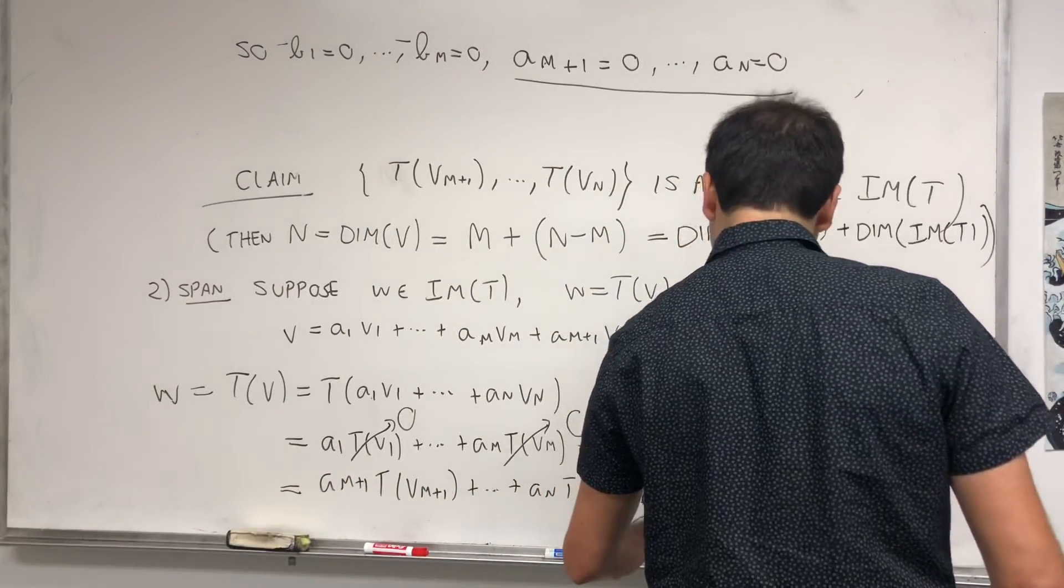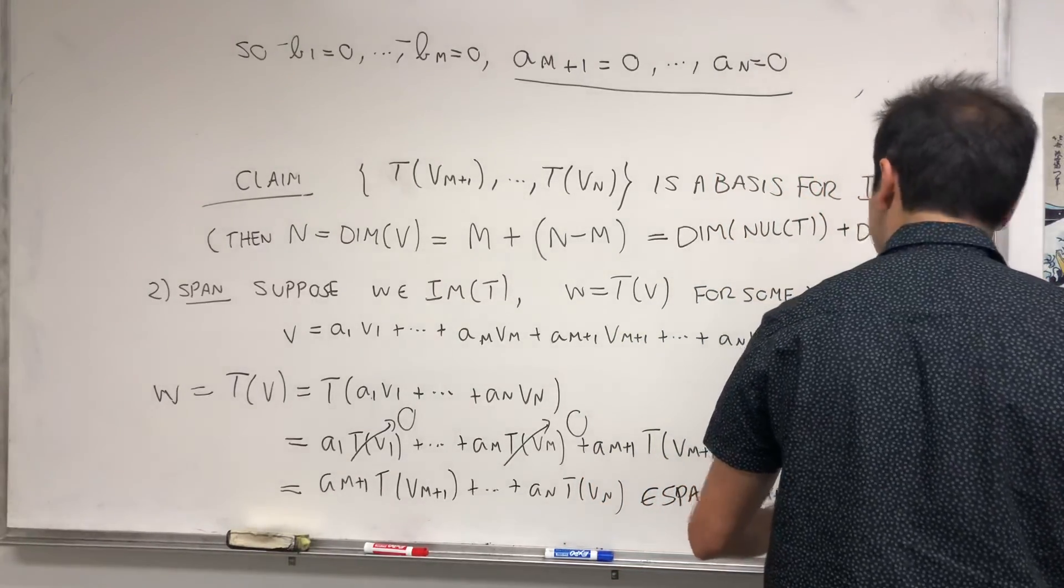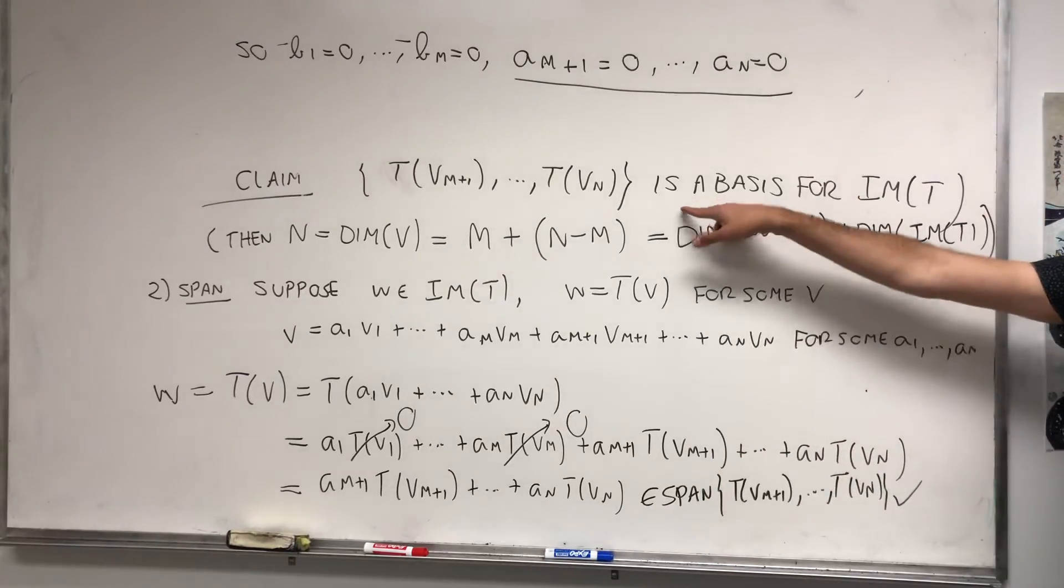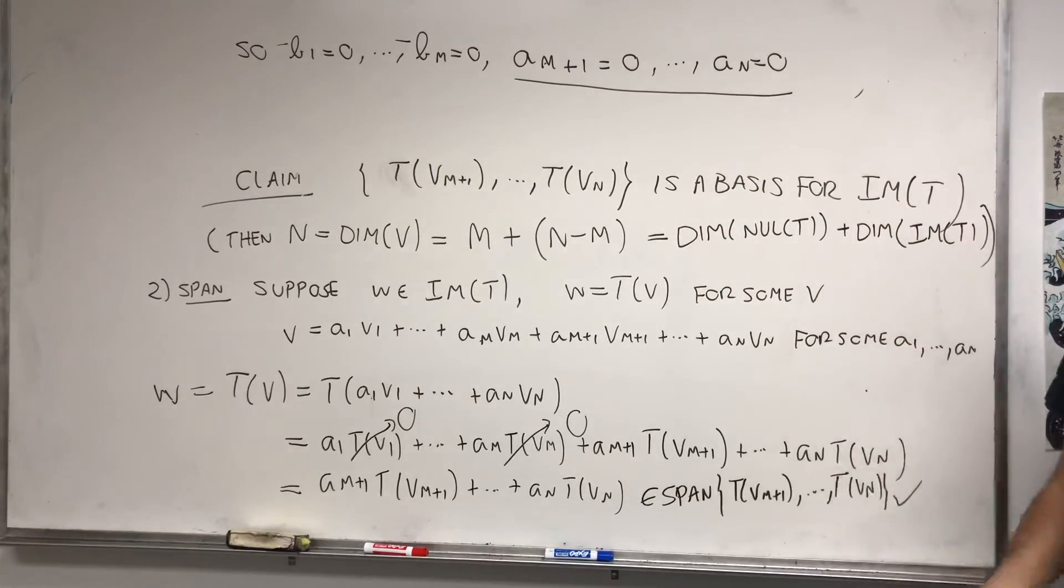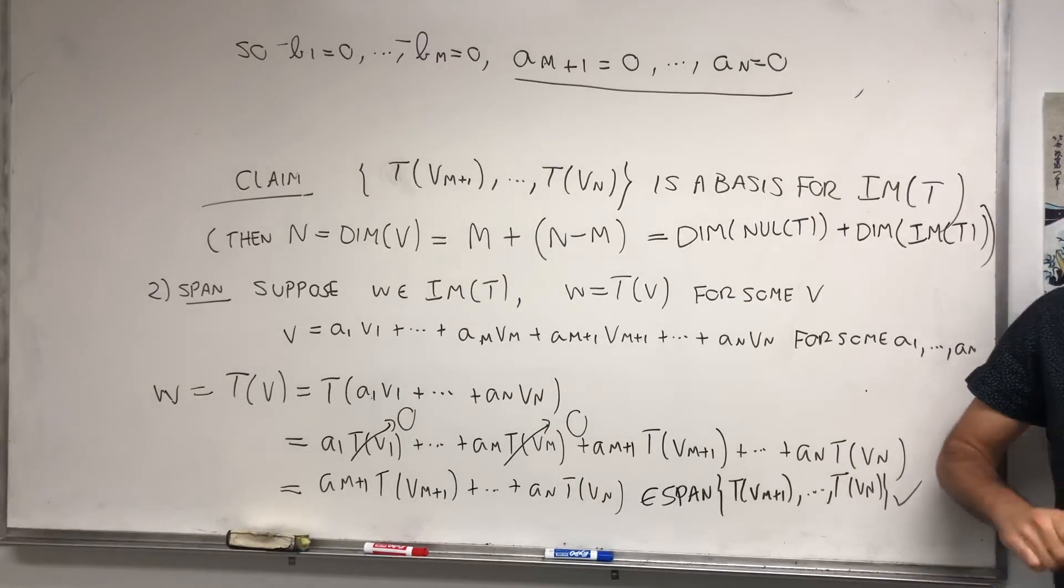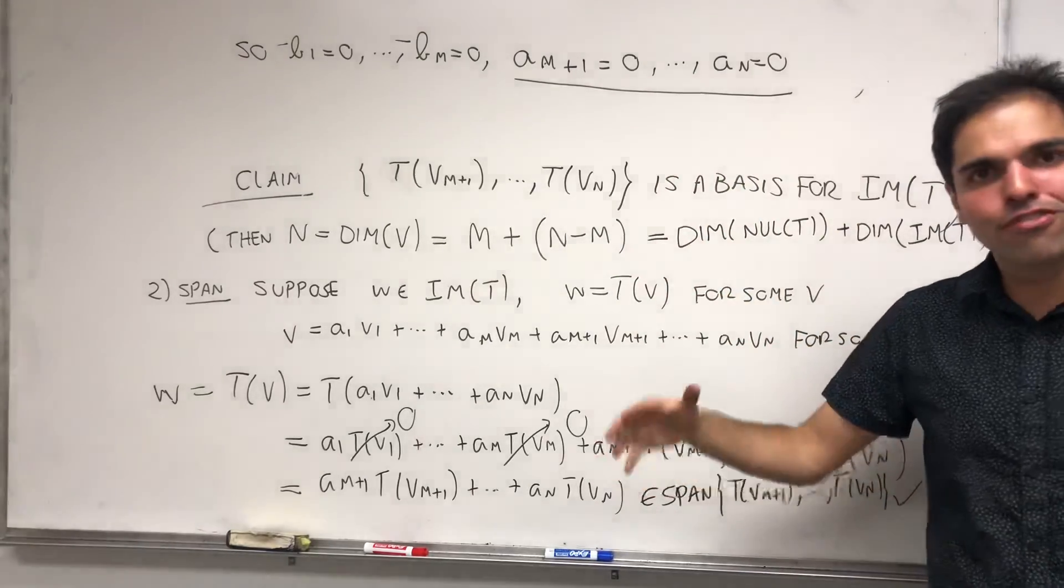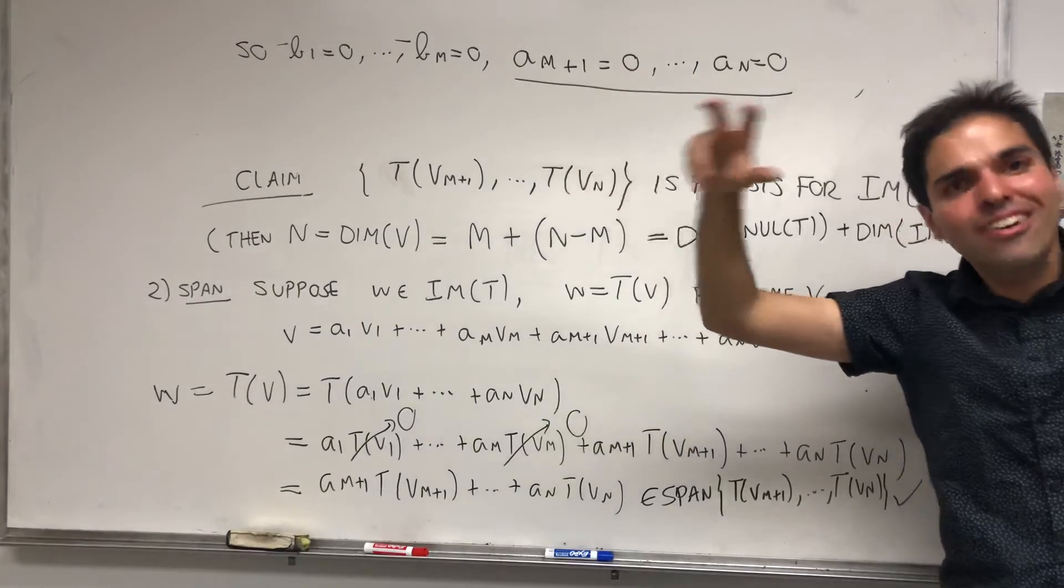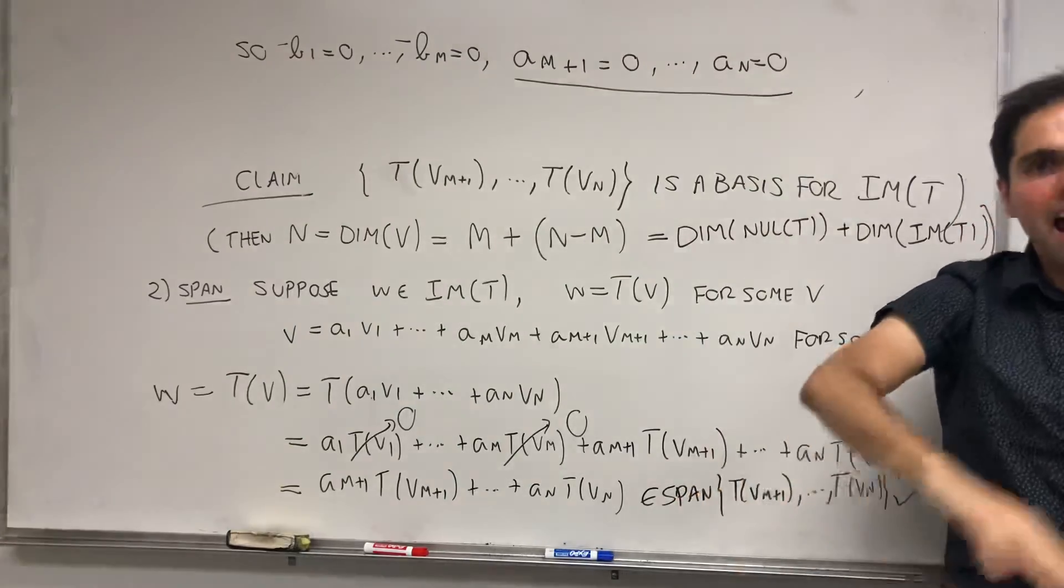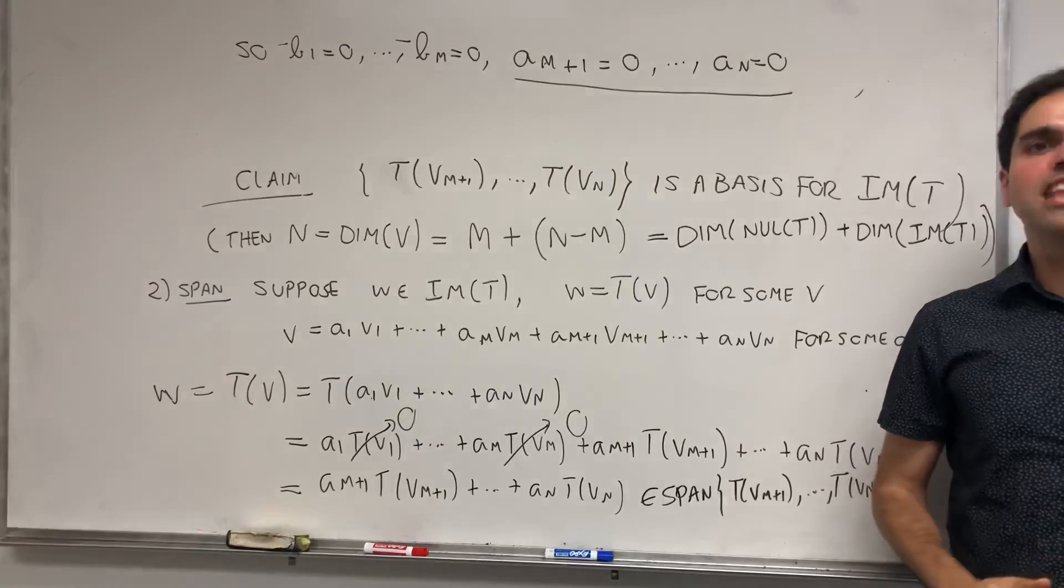So it's in the span of the set that we want: T(Vm+1), ..., T(Vn). And therefore we are done. This set is in fact a basis for our image, and therefore just by adding up those two dimensions, we get that it's the same as the dimension of V. And it's important that it's the dimension of V, because we're technically adding vectors in V. We started with the basis for the null space of V, and extended it to a basis of all of V. That's why it's not dimension of W.